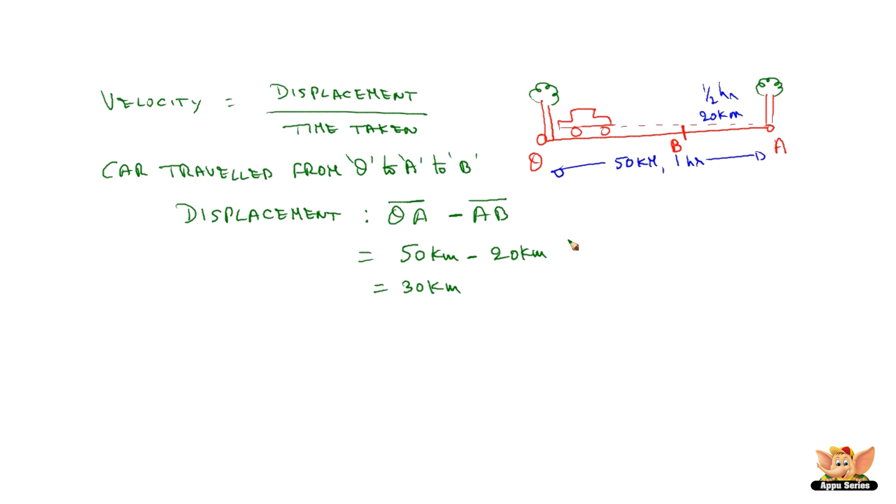We need to understand here one thing that is basically when the car moved from position O the final position of the car is B. Since initial position of the car is O and final position of the car is B.